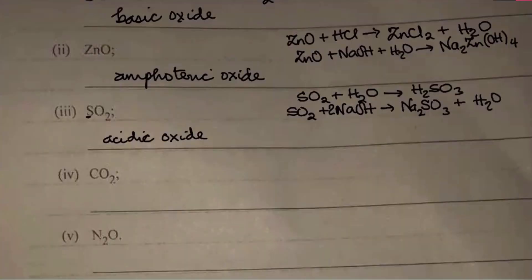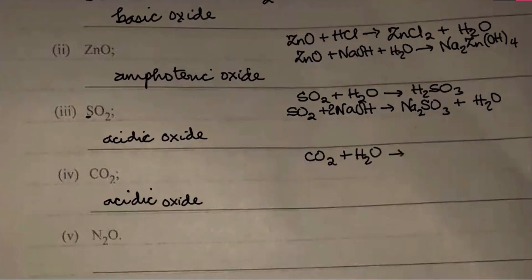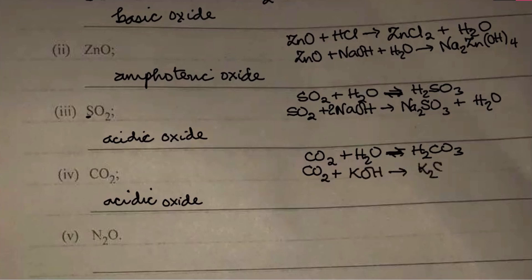The next one is carbon dioxide, CO2. Just like sulfur dioxide, it's also an acidic oxide. They share similar properties: CO2 + H2O gives carbonic acid, H2CO3 — which is a weak acid. CO2 can also react with KOH to give K2CO3 plus H2O — with a coefficient of 2 for KOH. Everyone's fine.